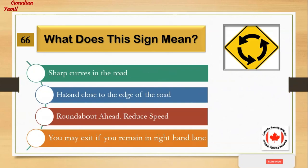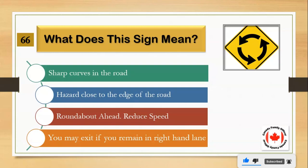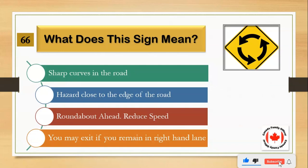What does this sign mean? Number 1: sharp curves in the road. Number 2: hazard close to the edge of the road. Number 3: roundabout ahead, reduce speed. Number 4: you may exit if you remain in right-hand lane. And the answer is: roundabout ahead, reduce speed.